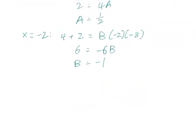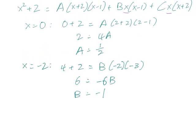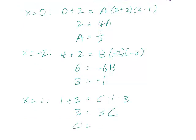And finally, if we let x equals 1, the terms involving A and B would disappear. So let x equal 1, and then we have 1 plus 2 equals, A and B go away, C times 1 times 3. So that means 3 equals 3C, and C equals 1.